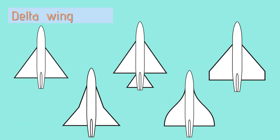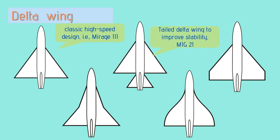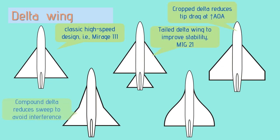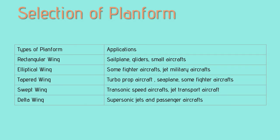Another specific type is the delta wing, which comes in five types: tailless delta, tailed delta, cropped delta, compound delta (also known as double delta), and agile delta. The agile delta wing aims to reduce drag at high speed and is mostly found in high-speed passenger aircraft like the Concorde. Note that all delta wings are swept wings, but not all swept wings are delta wings. Based on your design criteria, select the appropriate wing platform.